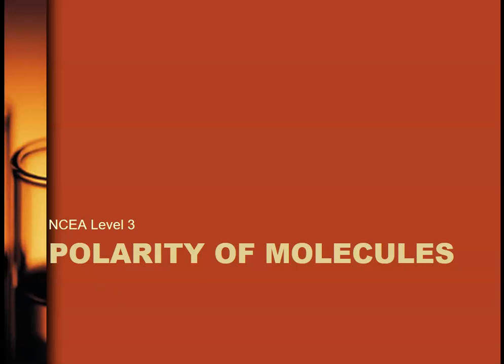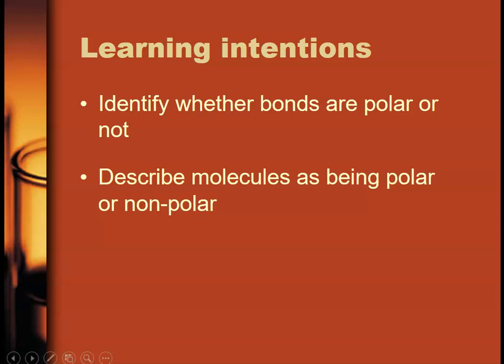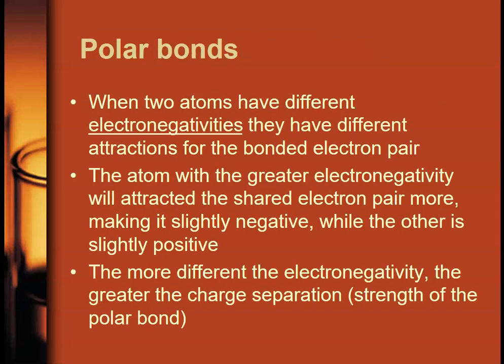Okay, so to do this we need to think about whether or not bonds are polar or not and therefore whether or not molecules are polar. So polar bonds happen when we have bonds between two atoms with different electronegativities. Because electronegativity is defined as the attraction of an atom for a shared pair of electrons in a covalent bond, then if two atoms have different electronegativities then the electrons that are shared will not be shared evenly and therefore there will be a polar bond.